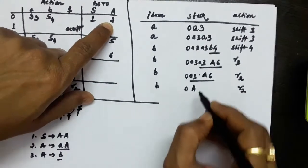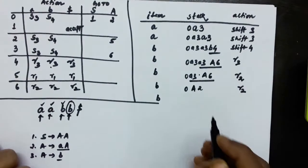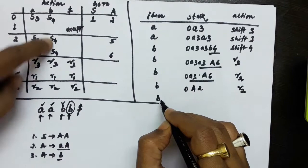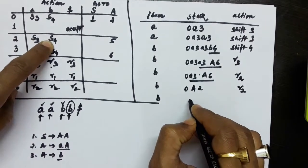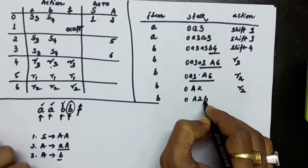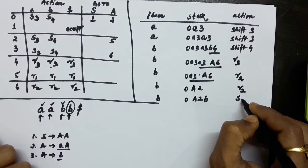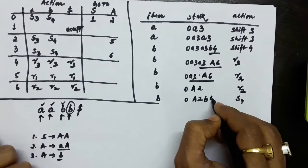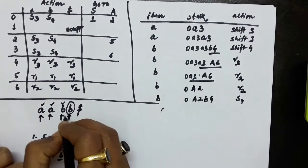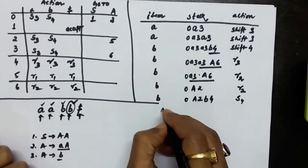State 0 on capital A suggests going to state 2. The b symbol is still live. State 2 on b suggests we shift the symbol onto the stack. So 0, A, 2 was already there, and we now shift b — applying rule shift 4 — so S4 is applied.